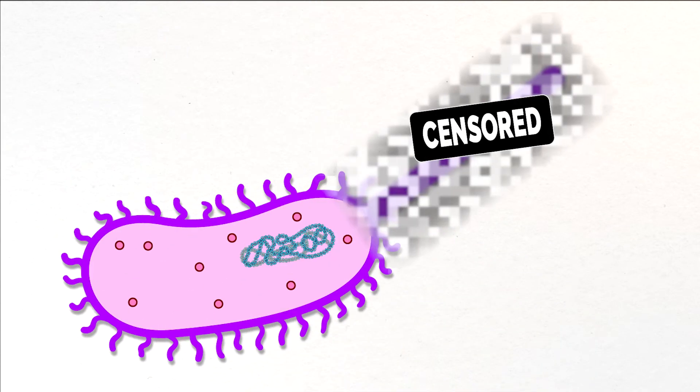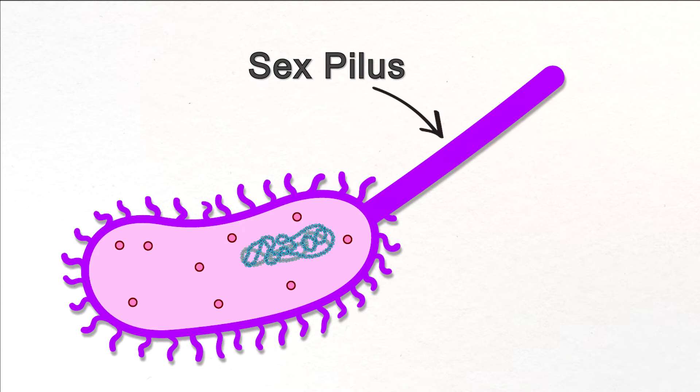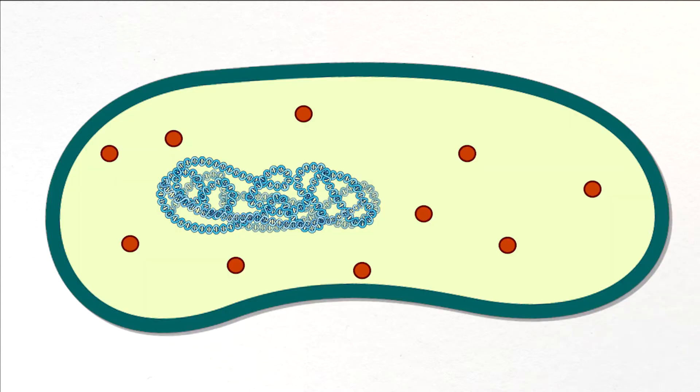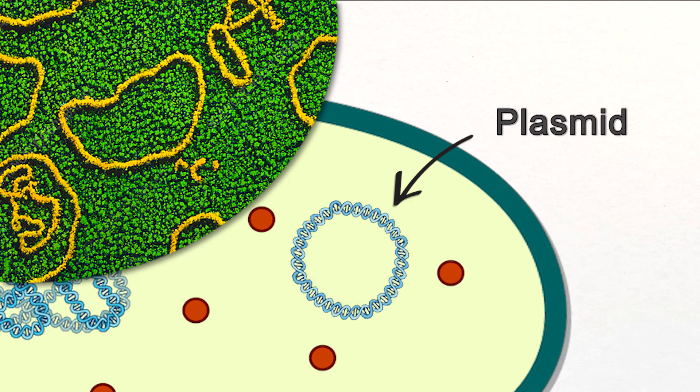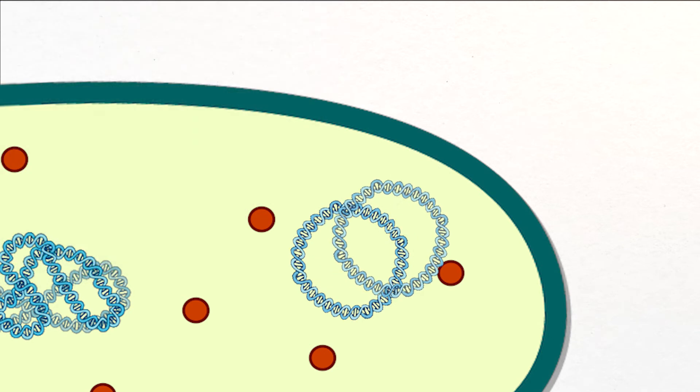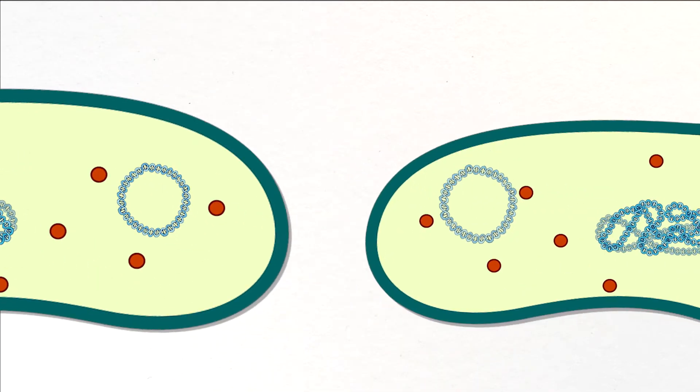The third way involves a structure called, I kid you not, a sex pilus. It turns out certain parts of a bacterium's DNA can break off and form these separate DNA structures called plasmids. Plasmids usually form rings and can replicate independently, allowing for easy transfer between organisms.